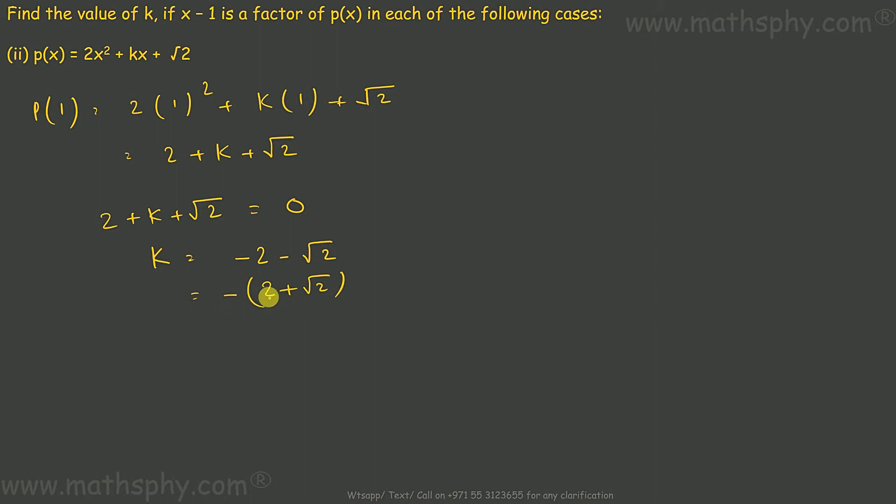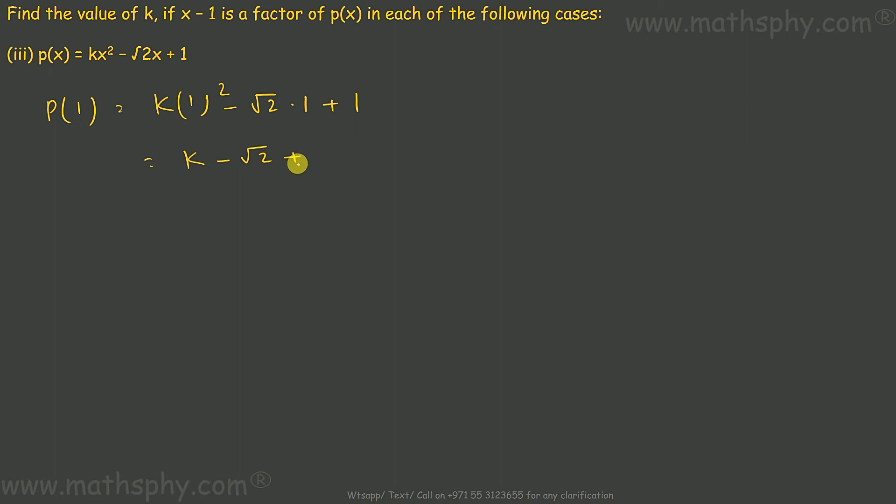This one here, replace x with 1. So k times 1 squared minus root 2 into 1 plus 1. This comes to k minus root 2 plus 1. Same story, k minus root 2 plus 1 equals 0, so k would be root 2 minus 1.